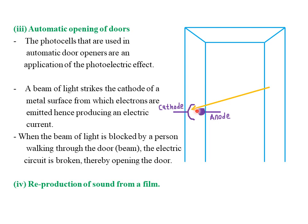The photoemissive cell is connected to an electromagnet with a north pole on one part of the door and a south pole on the other. When photoelectrons flow and the circuit is complete, the electromagnet attracts the two parts of the door, closing it. When a person passes through and blocks the light, no photoelectric emission occurs, the circuit opens, and the electromagnet loses its magnetism, causing the door to open automatically.